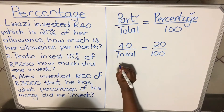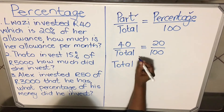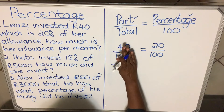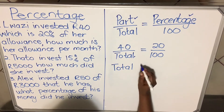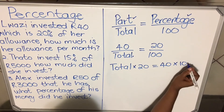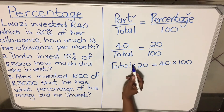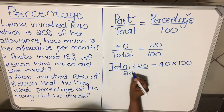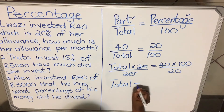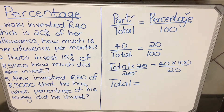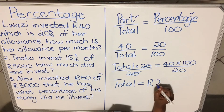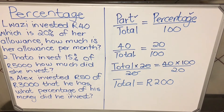When you have this, you cross multiply. In grade 8, if you have one fraction on each side, you multiply the denominator and the numerator of the opposite side. To isolate the total, divide both sides by 20 — the 20 cancels — and on your calculator, 40 multiplied by 100 divided by 20 gives you 200. So the total allowance per month is 200 rand.